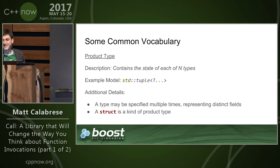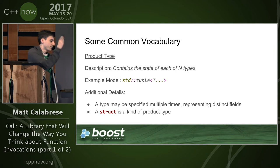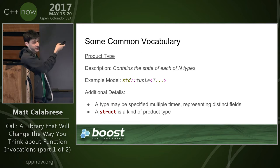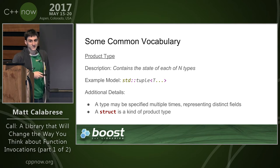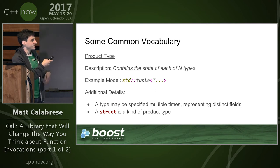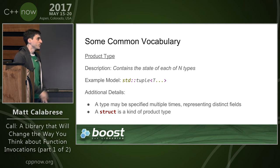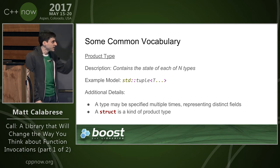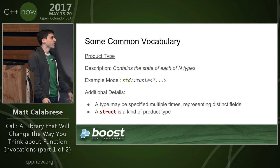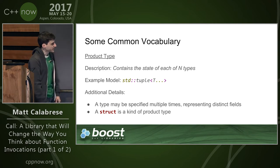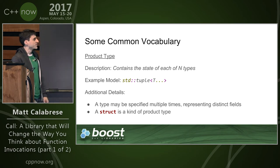Moving on, I want to make sure we're on the same page when I talk about a 'product type.' A product type is any type that contains the state of n different types. A good example is std::tuple — it's a variadic list of Ts and it contains the state of each one. You could also think of a struct as a kind of product type, although we don't generally interact with it with the same generalized facilities as a tuple.